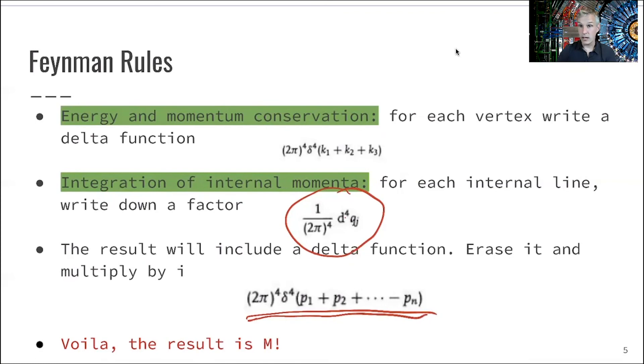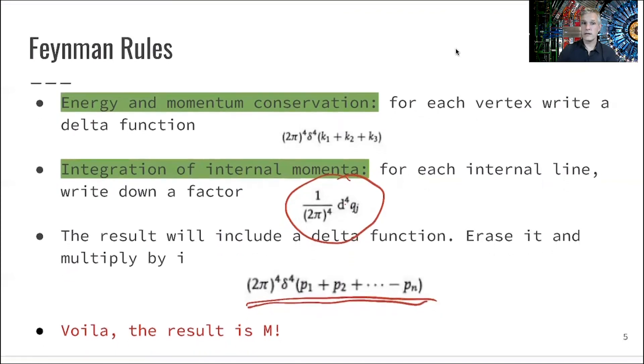And then voila, you just calculated a matrix element. All right. So those are the rules. Now, the key is to practice how to apply them. So what we'll do next is to practice using this toy experiment and how to calculate the matrix element, the phase space, and the decay rates and cross-sections. And then at the following step, we will see how this all unfolds when we have a real theory, like the weak interaction and the strong interaction.